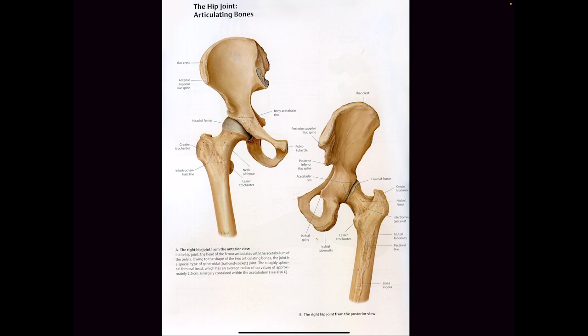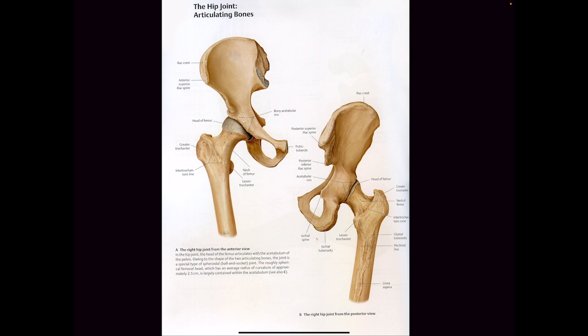They have to keep it structurally sound by putting a titanium rod into it so it can fuse back together correctly. The femur has a very specific design — one head is a curved circular head, the other head looks like a hinge. So we have a joint on one side that is completely different than the joint on the other side.